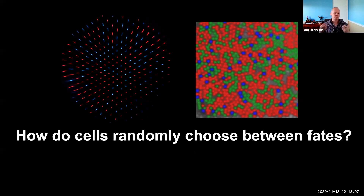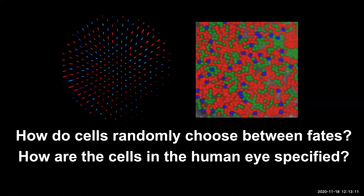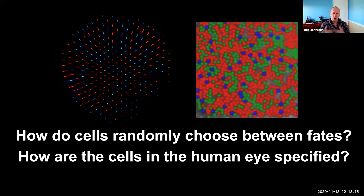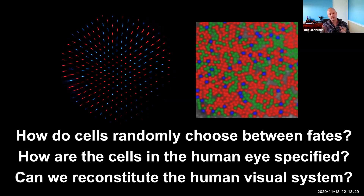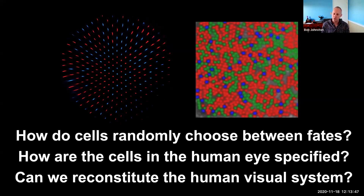These three big questions are: how do cells randomly choose between fates; how are the cells in the human eye specified — today I'll tell you about the three cone cells, but the ultimate goal is to figure out all hundred or so subtypes of neurons in the eye; and ultimately, can we reconstitute the human visual system in the dish? What we want to do is grow a human retina and a human brain organoid and connect them as a model system to study the development of human vision, though these are very early days.